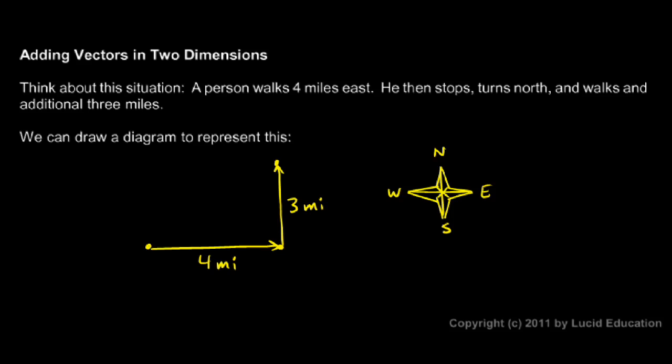Take note of how I've drawn these. I drew my four-mile vector pointing to the right, which is east, and I drew my three-mile vector pointing up, which is north. So the way I've drawn them matches the given information.